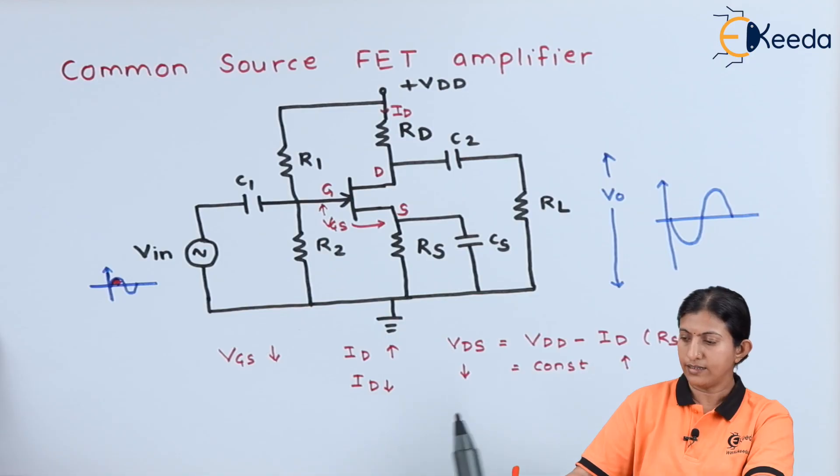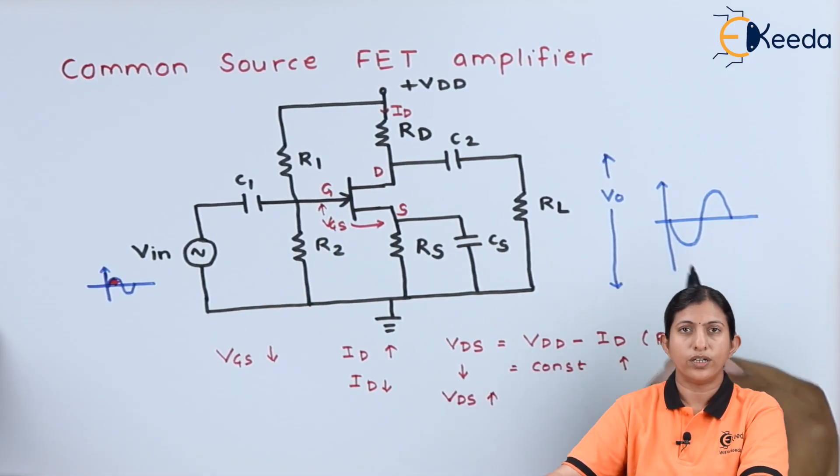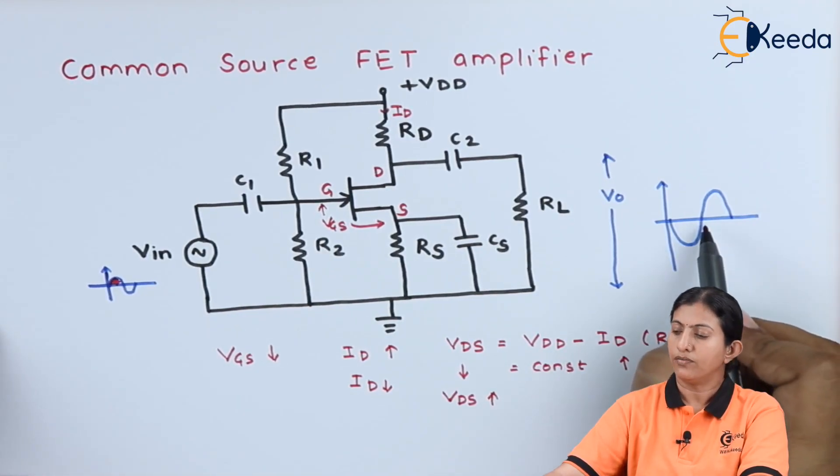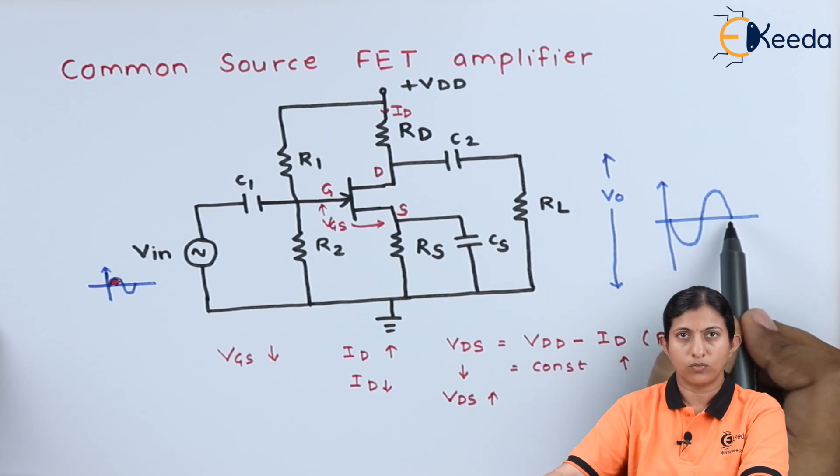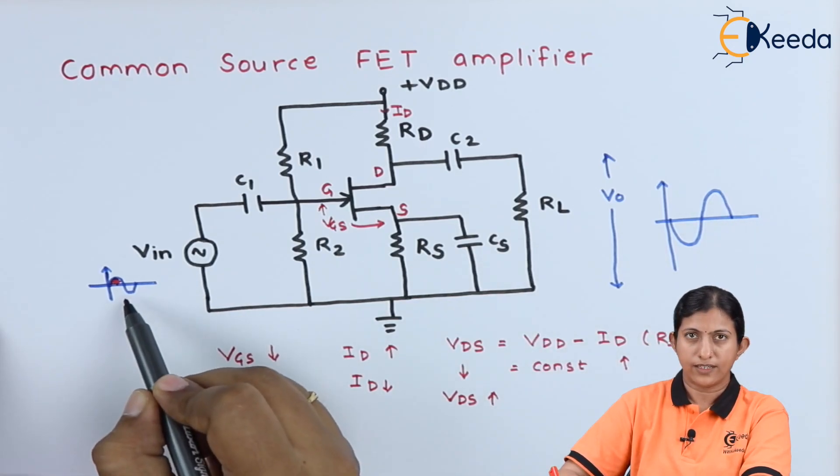So when ID decreases, the VDS voltage increases, and we will get the positive output for the negative cycle.